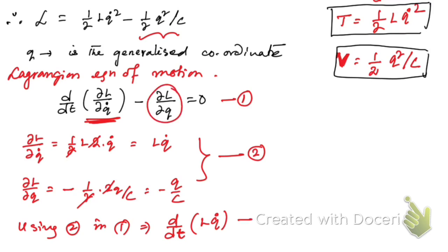Here's the last step. L can be taken out because it doesn't change with time, so the derivative of Q̇ is Q̈. Thus: LQ̈ + Q/C = 0. This is the required equation. Hope you understood this. Thank you for watching, see you in the next video.